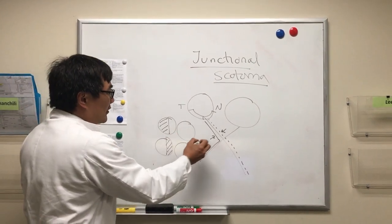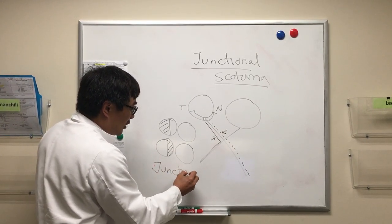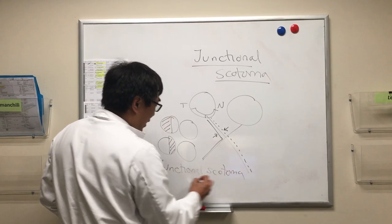These two field defects are at the junction of the optic nerve and chiasm and referred to as the junctional scotoma of Traquair.